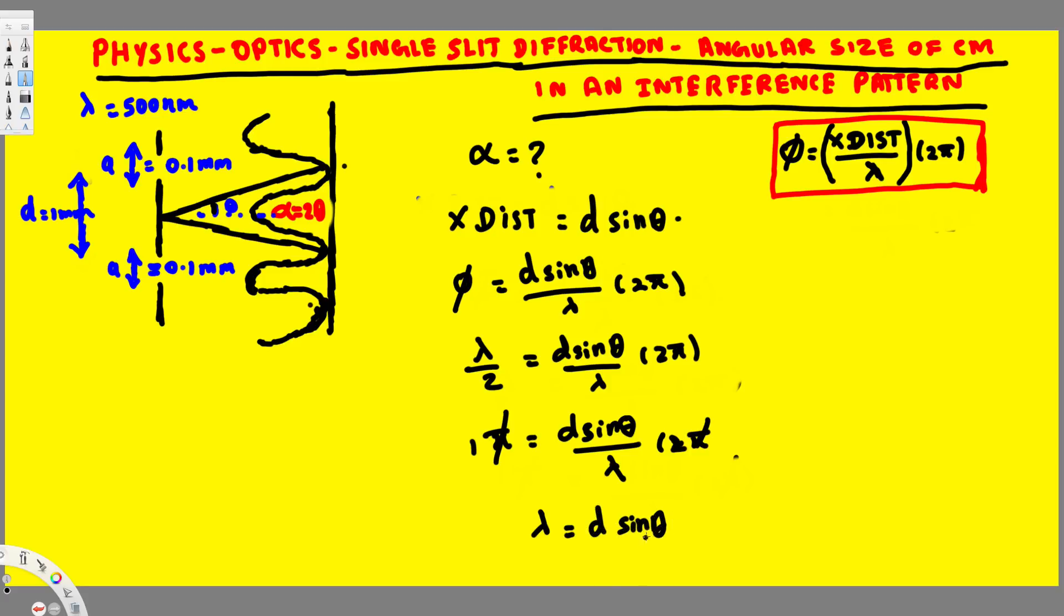And when we have very small angle, here we are dealing with very small angles. So when we have small angles, this sine theta is equal to theta, because if you take limit theta approaches 0 and divide sine theta by theta, that's going to be equal to 1.